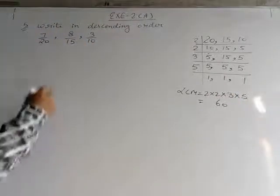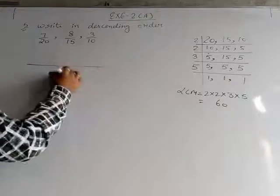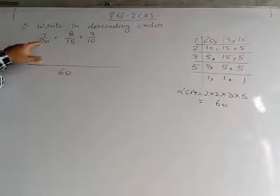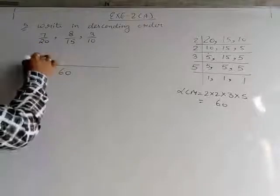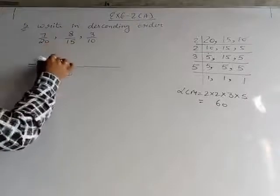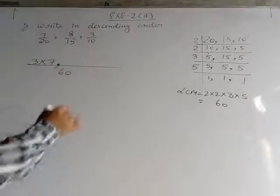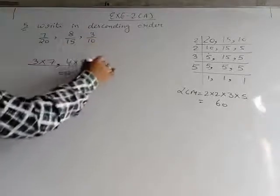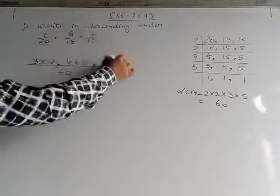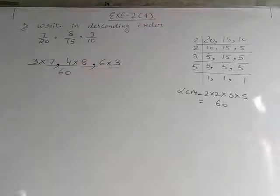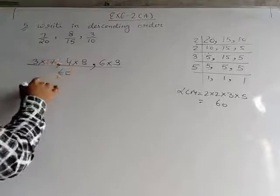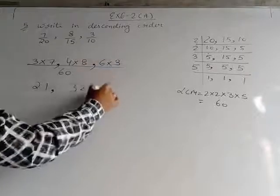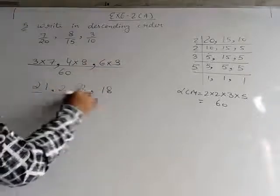So what we have to do? We have to write the common denominator as 60. Now in the next step, we read the table of 20: 20×3=60, so we multiply the upper number 7 by 3 to get 21. For 15: 15×4=60, so we multiply the upper number 8 by 4 to get 32. For 10: 10×6=60, so we multiply the upper number 3 by 6 to get 18. So we get 21/60, 32/60, and 18/60.